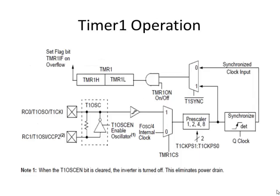Here's the block diagram for Timer 1. I know it looks complicated, but it's like a big sandwich — don't try to eat it all at once, take one bite at a time. The individual parts are not as complicated as the whole picture looks. Let's start with the heart of the timer itself: the timer register. This is a 16-bit register. The PIC microcontroller is an 8-bit CPU, so we usually only deal with 8-bit registers. We can think of Timer 1, TMR1, as two 8-bit registers put back-to-back: TMR1H is the high byte, and TMR1L is the low byte. When I say TMR1, I'm referring to the entire 16 bits.